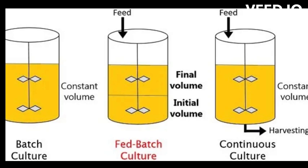In a batch culture, cells are grown in a closed system with a fixed volume of medium. The cells are allowed to grow until they reach a certain cell density, after which the culture is harvested.